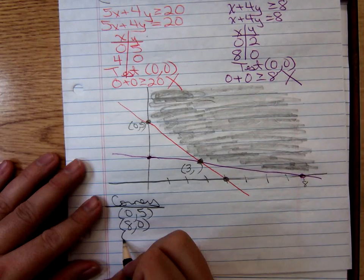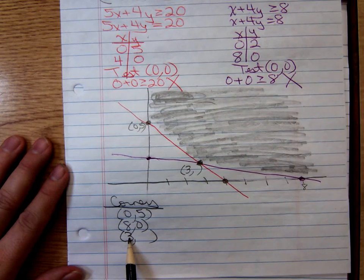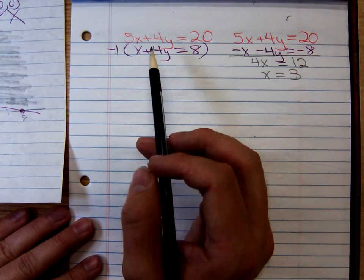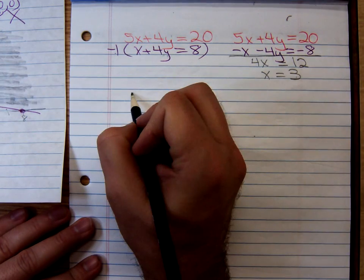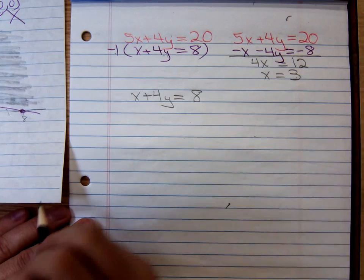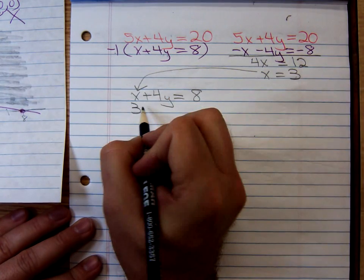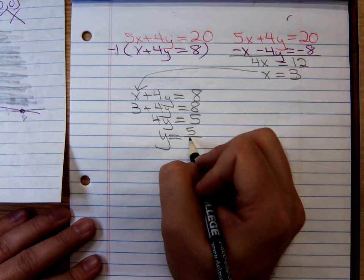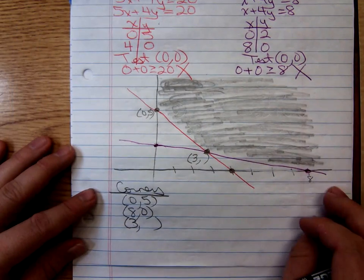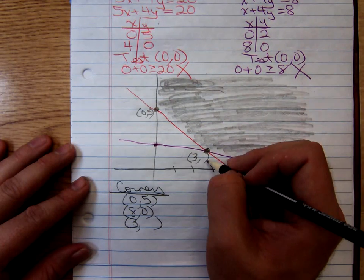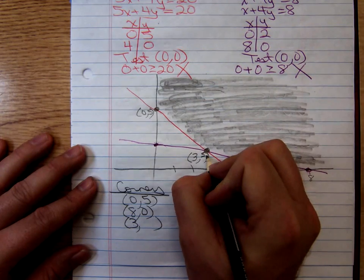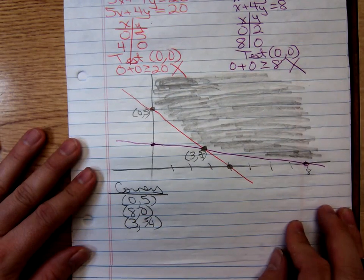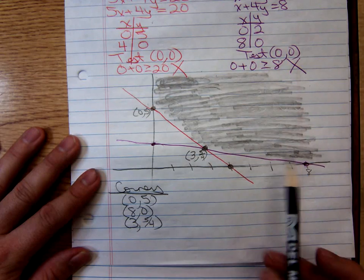Now, how do we find the y coordinate? So, we know the x coordinate for the third corner is 3. To find the y coordinate, what do we do? Plug that 3 in. It doesn't matter which one you plug into, the red or the purple. I'm going to use the purple one. x plus 4y equals 8. Plugging in the 3, 3 plus 4y equals 8. So, 4y equals 5. That means y is equal to 5 fourths. So, we found our three corners. Two of them, we were able to look at the graph to determine. The other one, we had to use elimination.